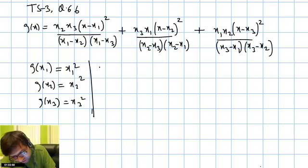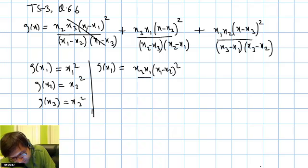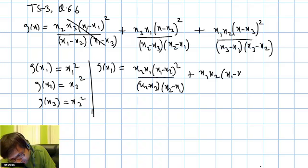To find G(x1), we replace x with x1. You can see one part becomes 0 — x1 minus x1 is 0. So that term vanishes, and we're left with x3·x1·(x1 - x2)² divided by x2·x3·(x2 - x3), plus x1·x2·(x1 - x3)² over (x3 - x1)·(x3 - x2).